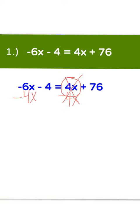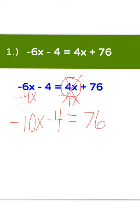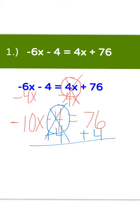That cancels out the 4x and leaves us with negative 6x and negative 4x — same signs, so we add and keep, giving us negative 10x. Bring down the rest: minus 4 equals 76. Now we need to get the constant on the other side, so we get rid of the minus 4 by adding 4 to both sides. That leaves us with negative 10x equals positive 76 plus positive 4 — same signs, so we add and keep — positive 80.